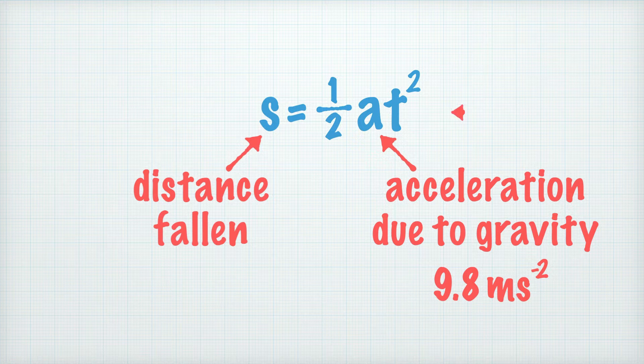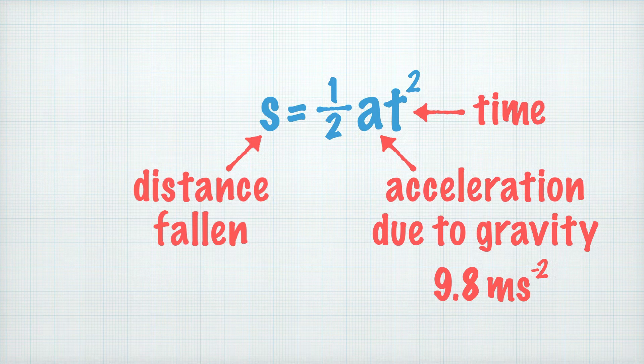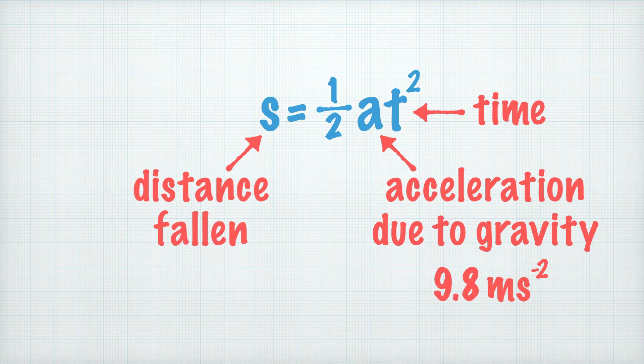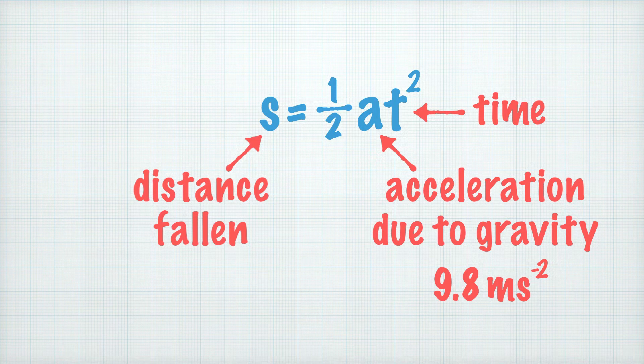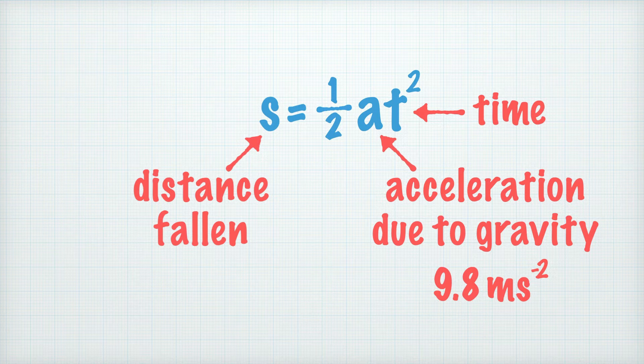And finally, t is the time the object, the rod in this case, has been falling. If we plug in values of time into the equation, then we can find how far the rod will fall in that time. And that's where we should make our marks on it.